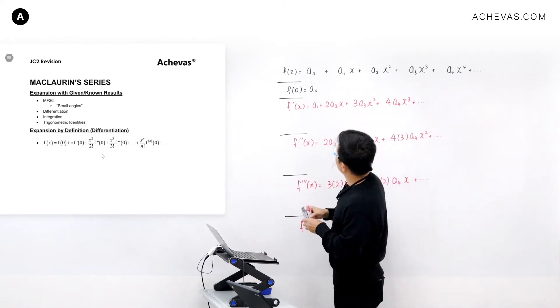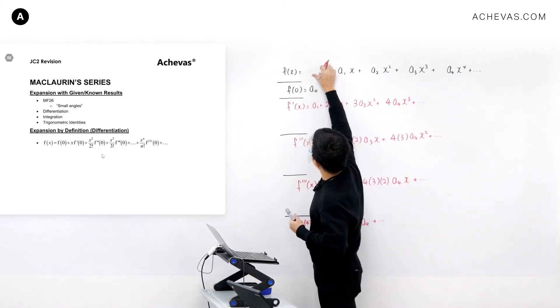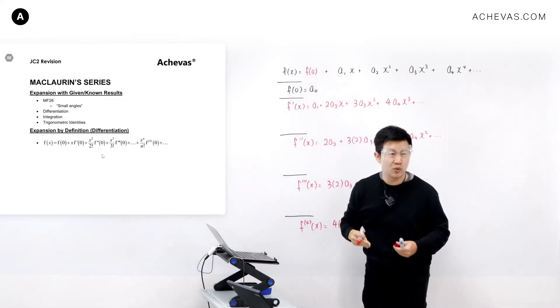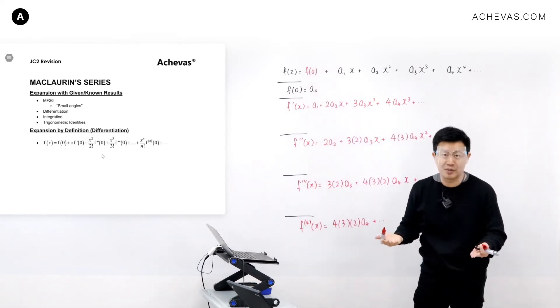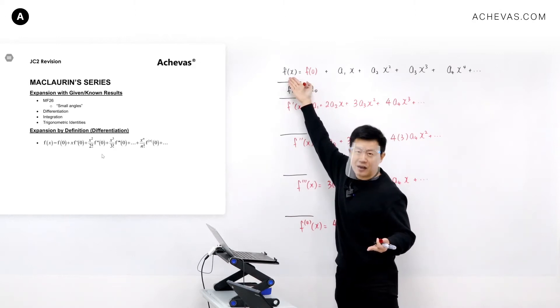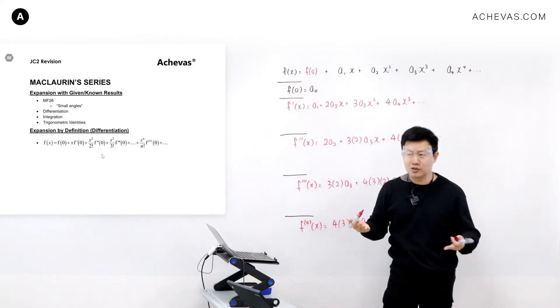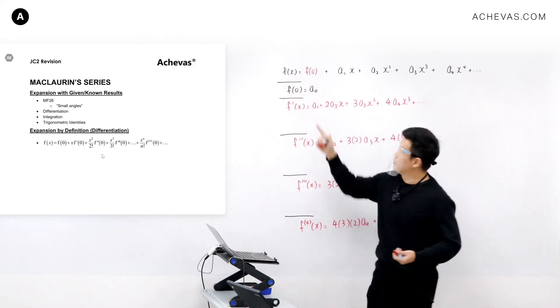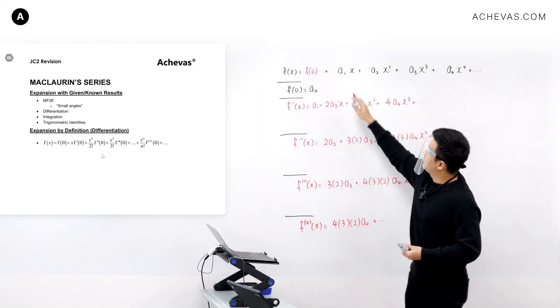a0 can be found by substituting 0 into the function that you are supposed to re-express. So I can replace a0 by f(0), which is a number. For example, if f(x) is e to the power of x, then e to the power of 0 is 1, so I will substitute 1 here.